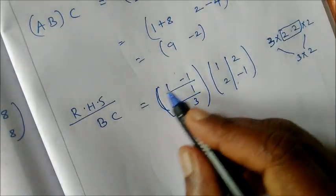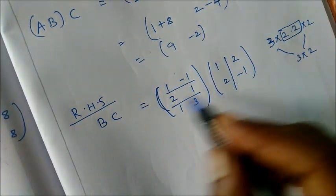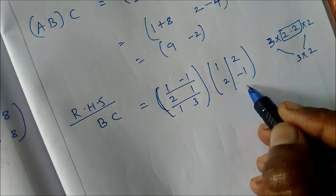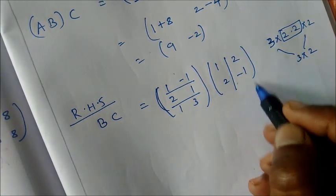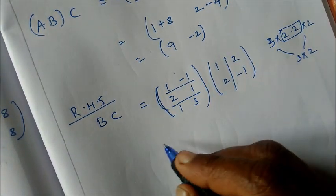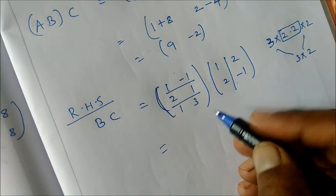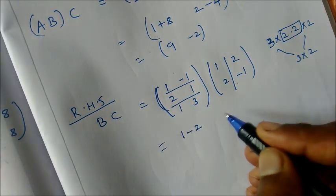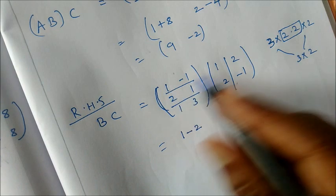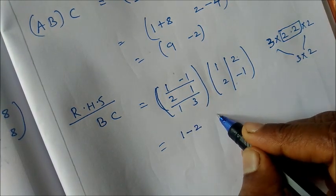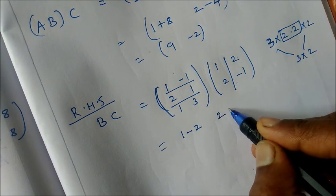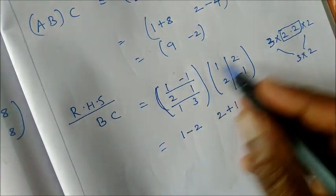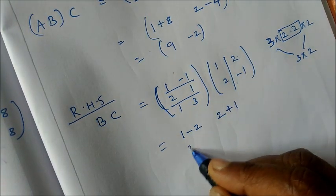Forming the 3×2 matrix with positions: first row first column, first row second column, second row first column, second row second column, third row first column, third row second column. First row first column: 1×1=1, plus (−1)×2=−2, plus 1×2=2... First row second column: 1×2=2, plus (−1)×(−1)=1. Second row first column: 2×1=2, plus 1×2=2.